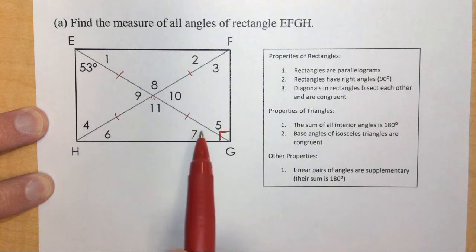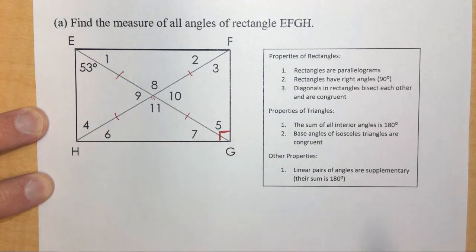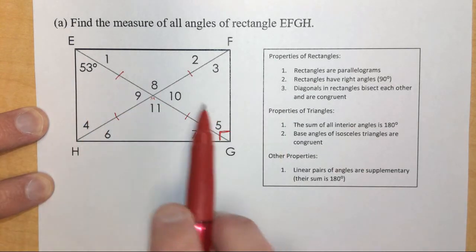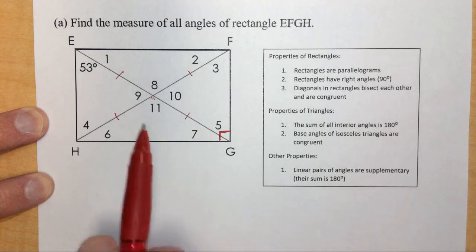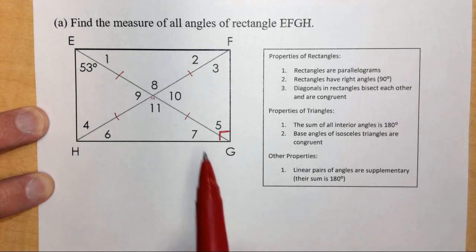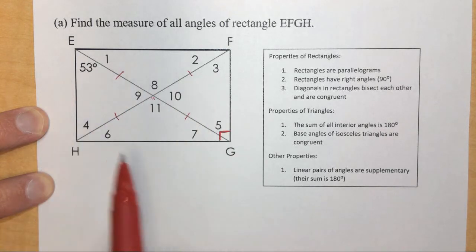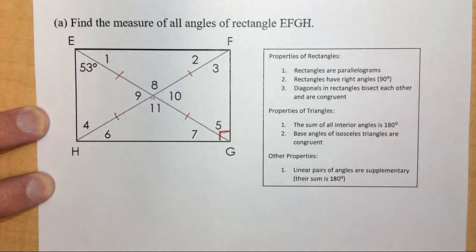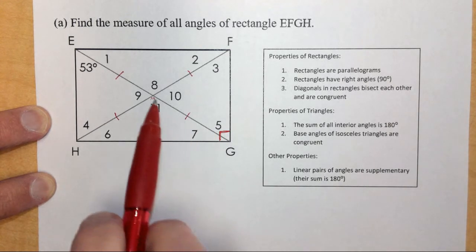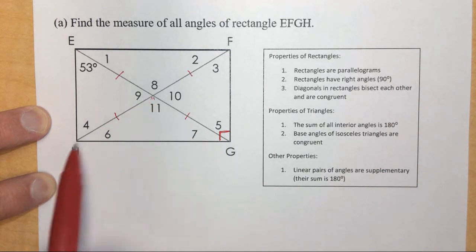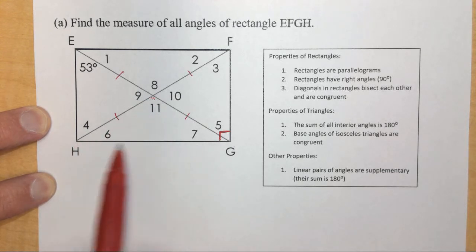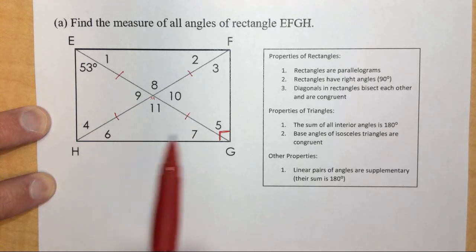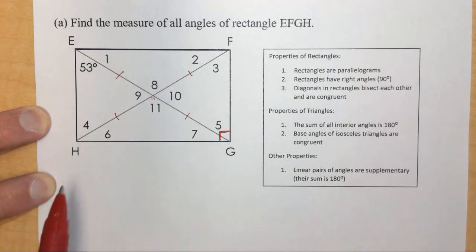Since these diagonal segments are all congruent, by drawing the diagonals we've created four separate triangles. These are not ordinary triangles — we've created four isosceles triangles, because all of these measurements are the same. Each triangle has two congruent sides. With isosceles triangles, we need to remember that the base angles opposite the congruent sides must be congruent.